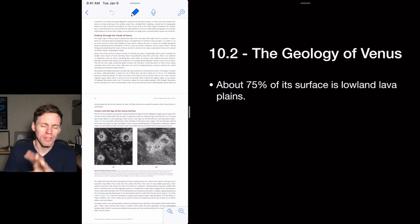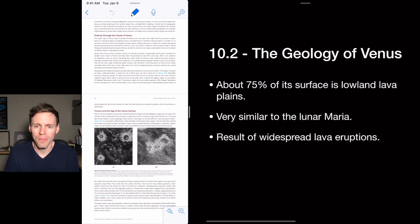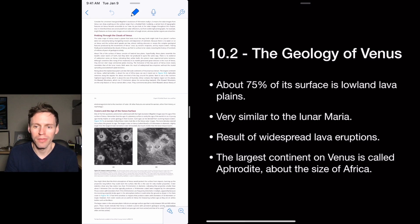So 75% of the surface is lava, like on the moon, lunar Maria. This all comes from just widespread lava eruptions. That means the center of Venus is still very hot and oozing out onto the surface all the time because of that convection.